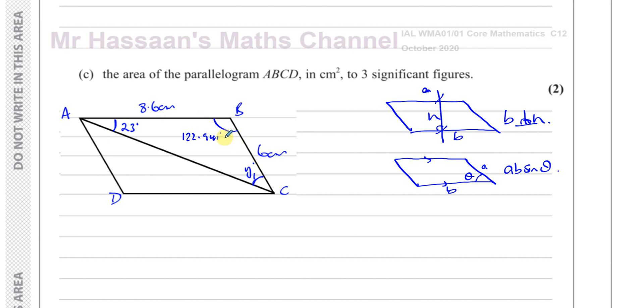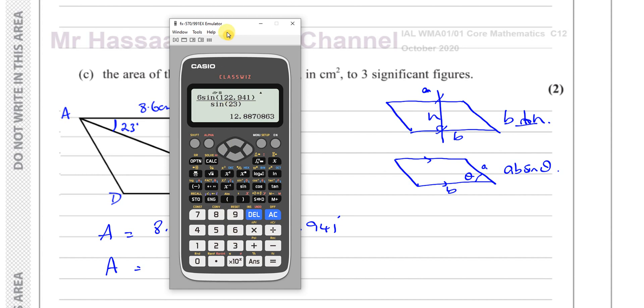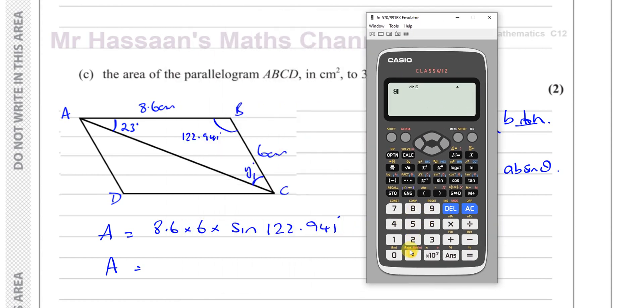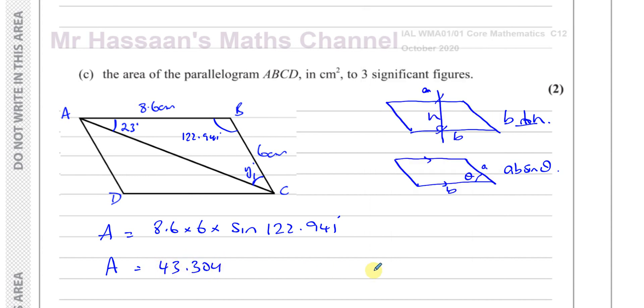So anyway, that's just a little side point. So because we know two sides and the angle between the two sides, we can say the area is going to be those two sides, which is 8.6 times 6, times the sine of the angle between them, which is the sine of 122.941. So the area is going to be given by 8.6 times 6 times the sine of 122.941. And that gives you 43.304. So therefore you can say the area is 43.3 centimeters squared. So that's the answer to part C.